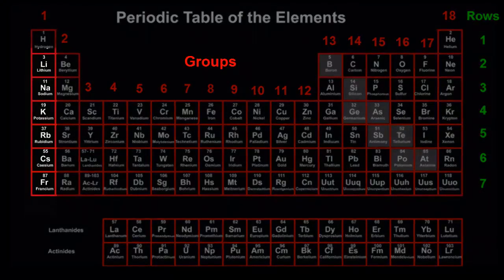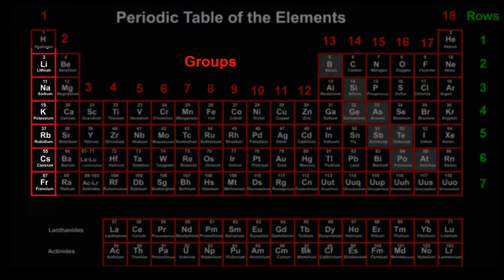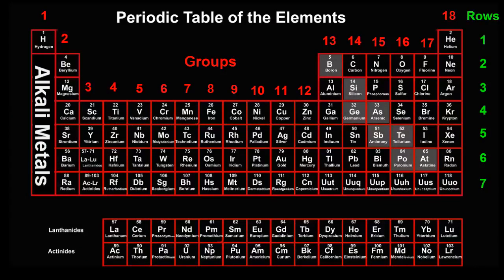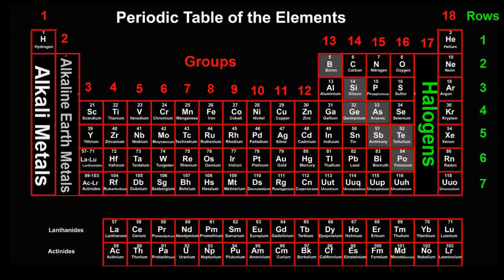For example, all of group 1 elements, except hydrogen, are soft, malleable metals that explode when you put them into water. Some groups even have family names. Group 1 elements are called the alkali metals. Group 2 elements are the alkaline earth metals. Group 17 are the halogens, and group 18 are the noble gases.